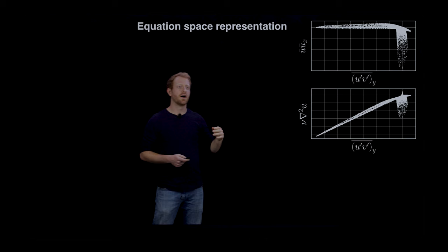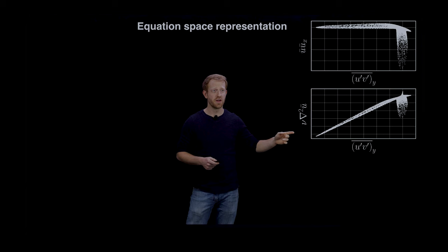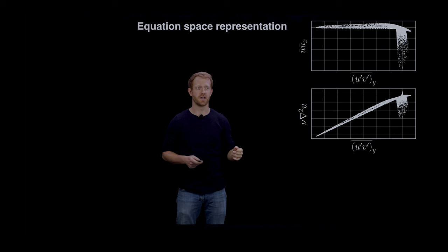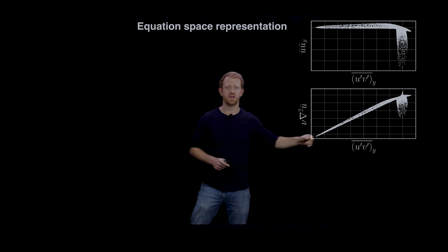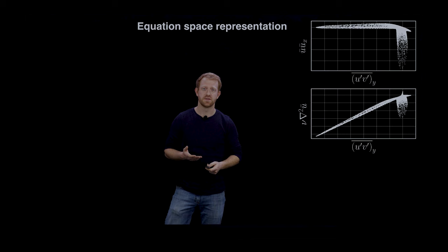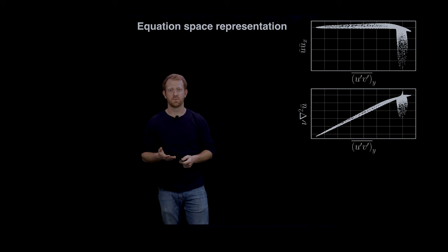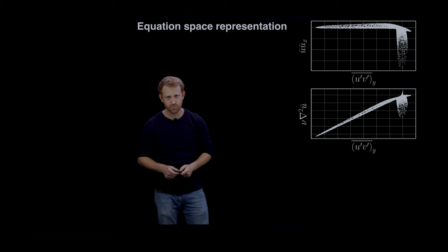Notice that dominant balance has a very natural geometric interpretation in this space. If we had a perfect balance between viscosity and Reynolds stress in the viscous sublayer, we'd see that all of the points from the viscous sublayer fall on a perfect line between those two. In general, dominant balance is going to show up in the equation space as an approximate local restriction to some subspace of the six-dimensional equation space.